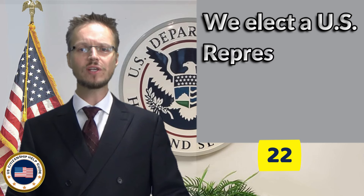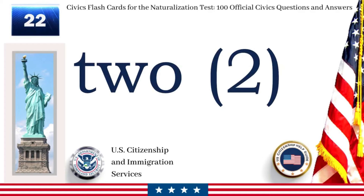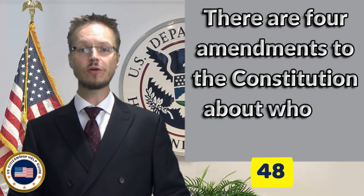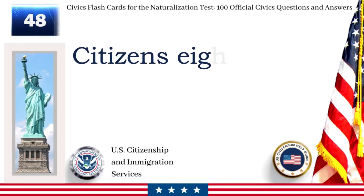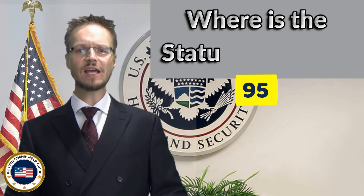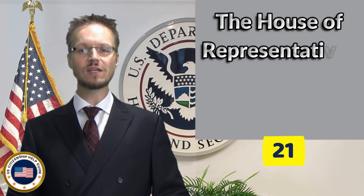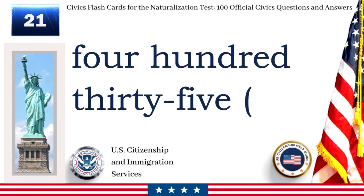We elect a U.S. Representative for how many years? Two. There are four amendments to the Constitution about who can vote. Describe one of them. Citizens 18 and older can vote. Where is the Statue of Liberty? New York Harbor. The House of Representatives has how many voting members? 435.